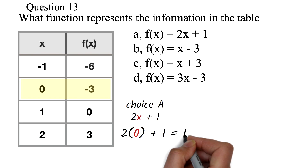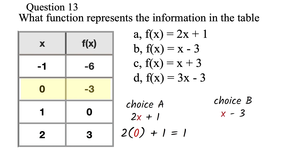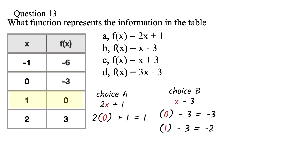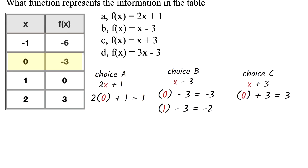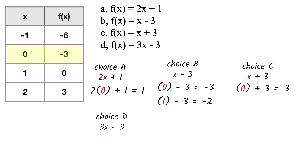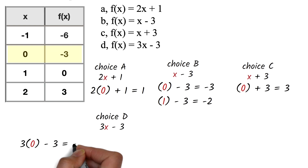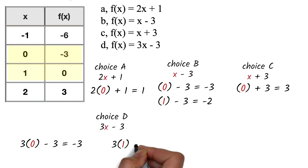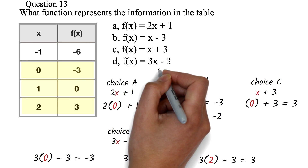Choice A is definitely wrong. Replace x in choice B with 0: 0 minus 3 equals negative 3, which is a possible answer. Replace x with 1 in choice B: 1 minus 3 equals negative 2, but it was supposed to be 0, so choice B is wrong. Replace x in choice C with 0: 0 plus 3 equals 3, but it was supposed to be negative 3, so choice C is wrong. For choice D, 3 times 0 minus 3 equals negative 3, 3 times 1 minus 3 equals 0, and 3 times 2 minus 3 equals 3 — all as expected. So D is the answer.